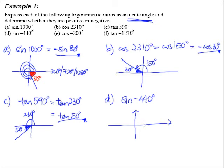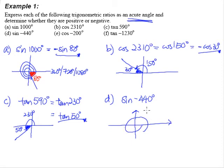We measure angles in the anti-clockwise direction for positive angles. For negative angles, we measure in the clockwise direction. So negative 440 degrees means going clockwise 440 degrees, and we need to figure out exactly where we stop.